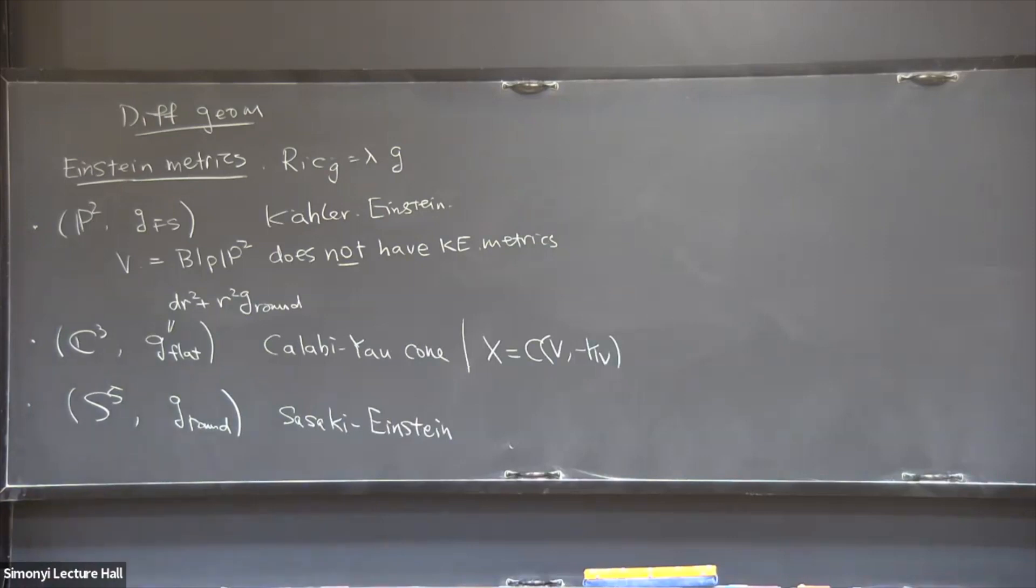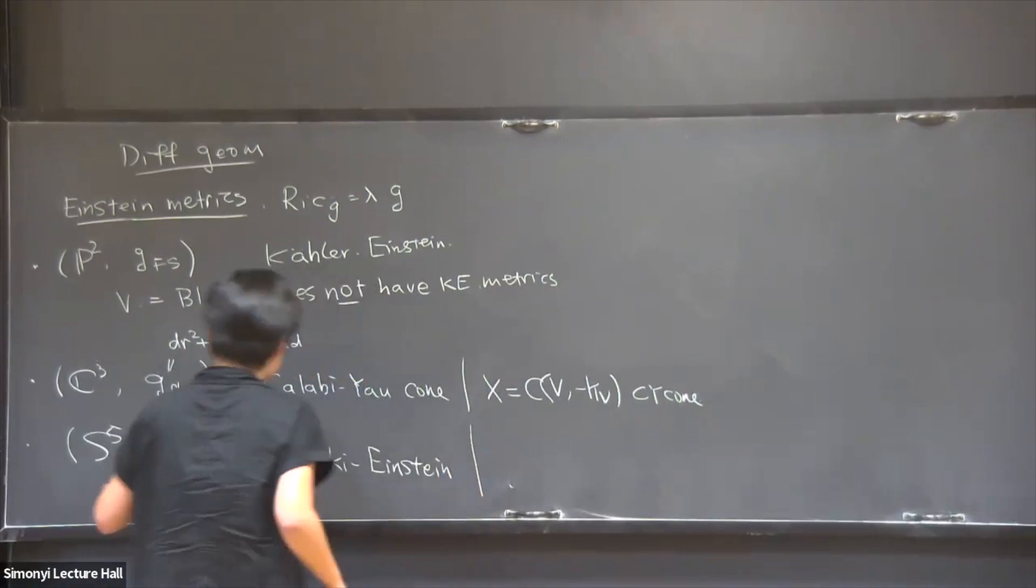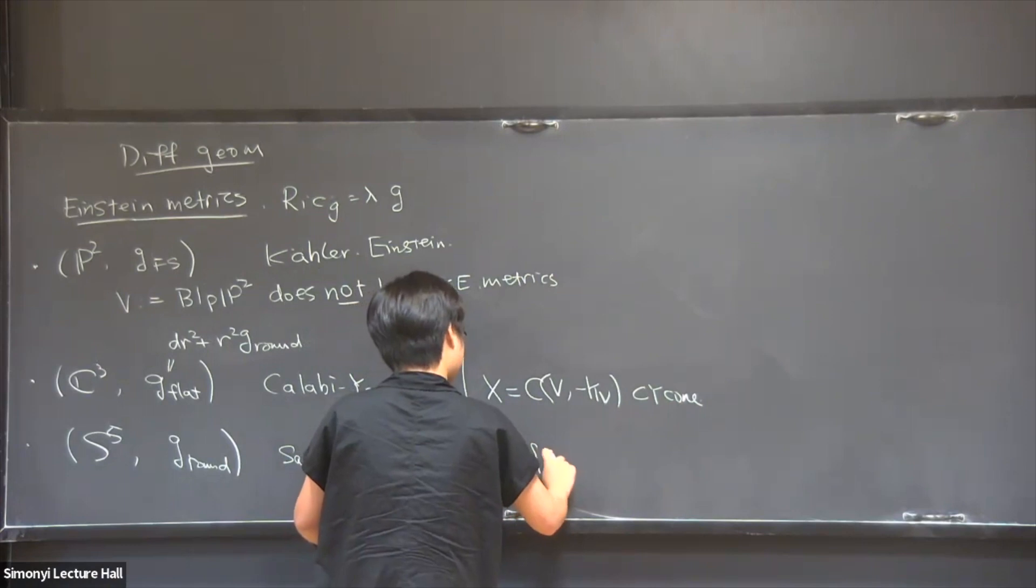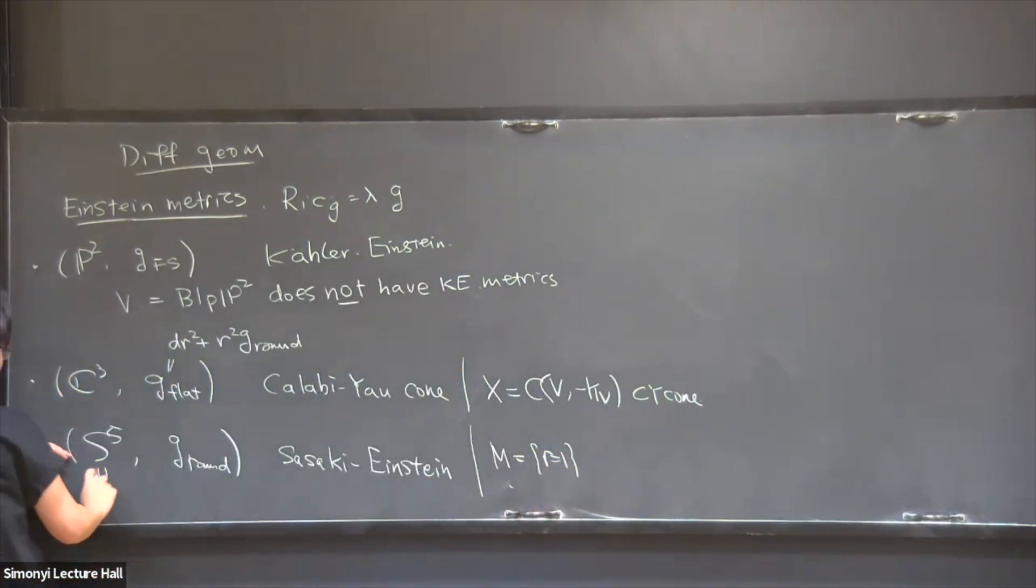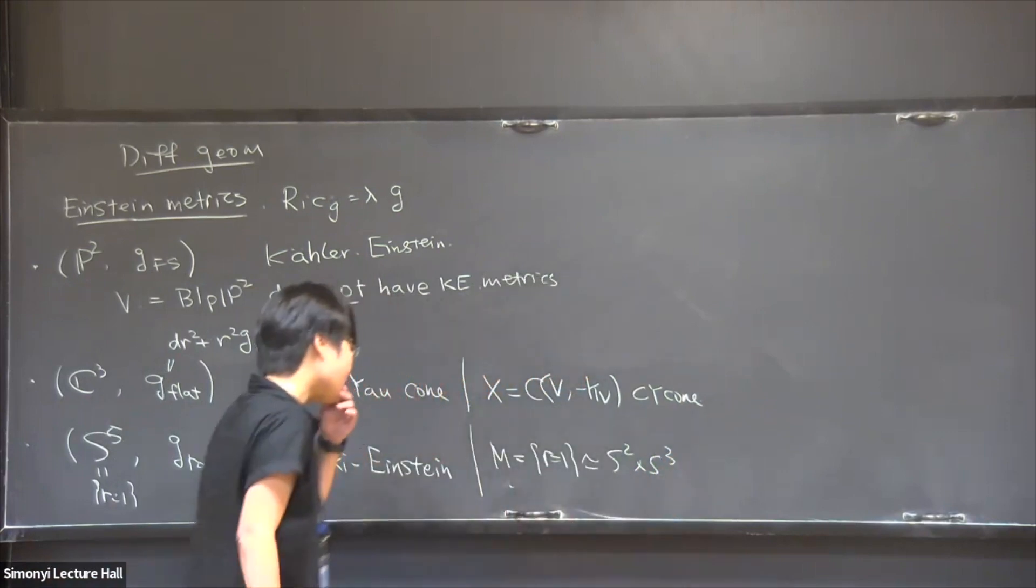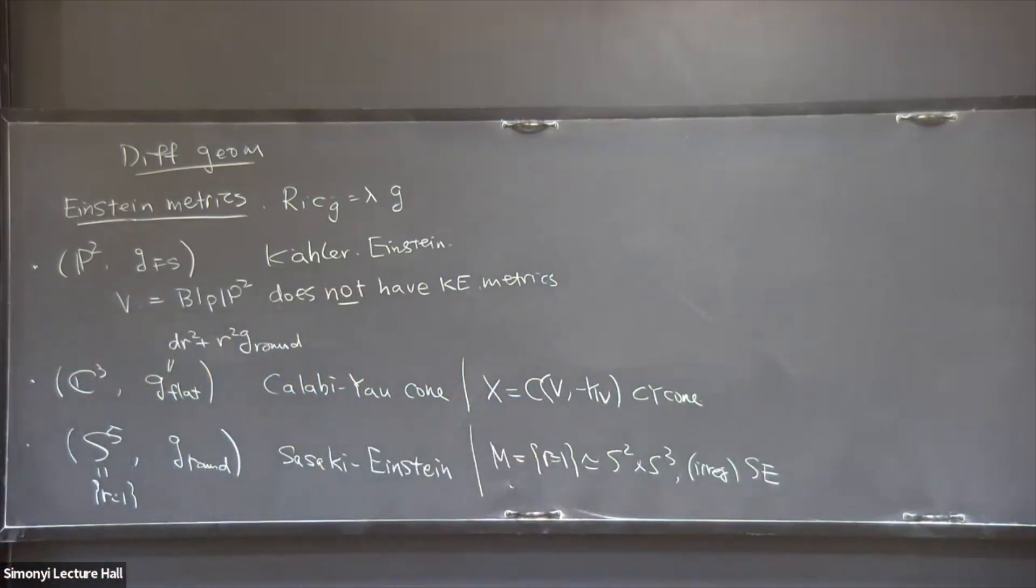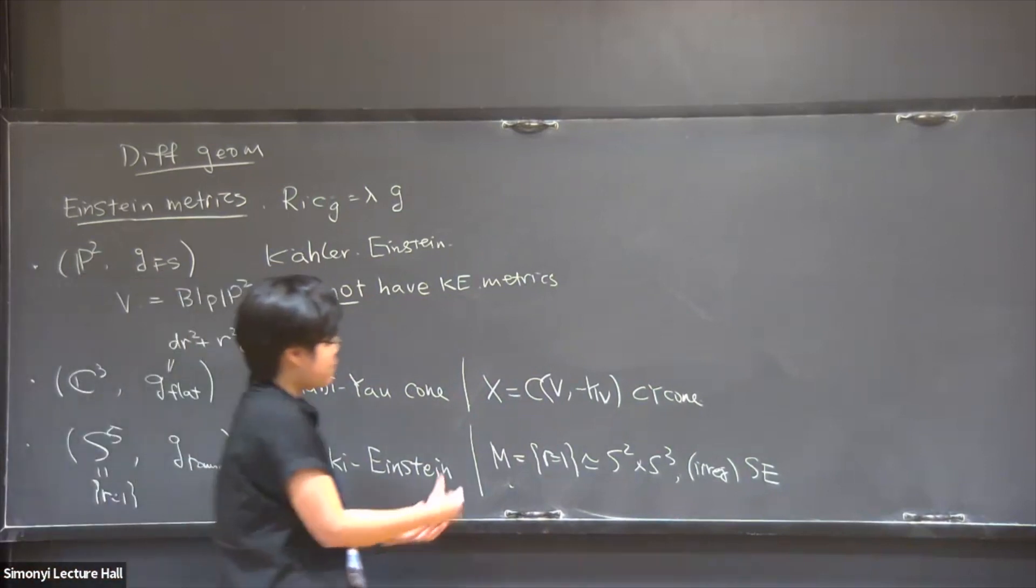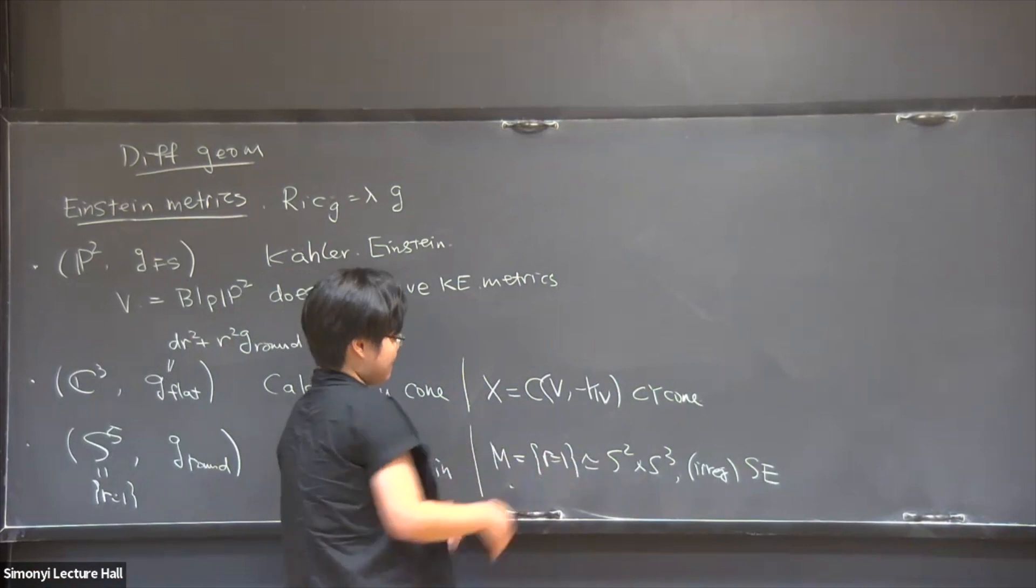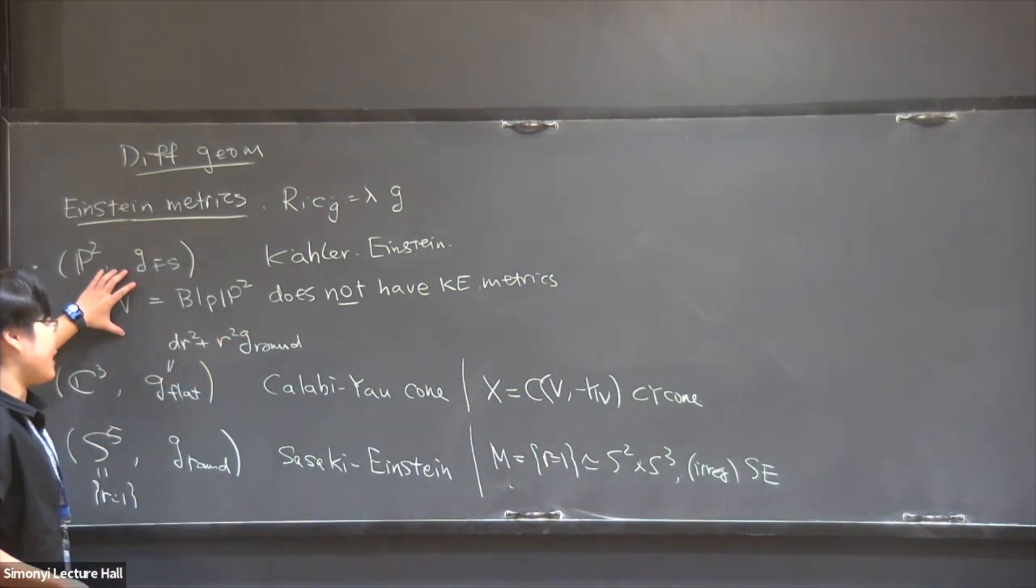By definition, it means that the metric cone is Kähler. So the study of all sorts of Einstein metrics have been of interest because it's known that, for example, on Fano varieties, they do not always admit a Kähler-Einstein metric. And a typical example would be P² blown up at a point. This does not admit a Kähler-Einstein metric. But if you're willing to take the affine cone over it, algebraically, just do the spec of the section ring. Then in this case, this is a Calabi-Yau cone.